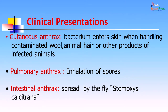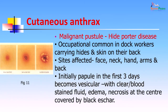Apart from cutaneous manifestations, anthrax may have pulmonary or intestinal manifestations. Cutaneous anthrax, the form seen in this patient, presented as a malignant pustule — the bacterium entered the skin when handling contaminated wool, animal hair, or other products of infected animals. This particular shepherd had carried an infected sheep on his back and the spores likely caused the malignant pustule. Cutaneous anthrax can also present as Hyde Porter's disease, an occupational disease commonly seen in dock workers carrying hides and skin. Sites affected include the face, neck, hands, arms, and back.